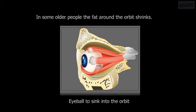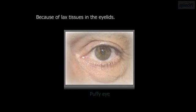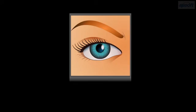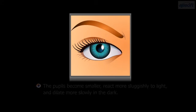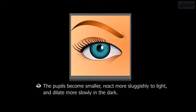A condition called ectropion occurs when the lower eyelid falls away from the eyeball. In some older people, the fat around the orbit shrinks, causing the eyeball to sink into the orbit. Because of lax tissues in the eyelids, the orbital fat can also bulge forward into the eyelids, making them appear constantly puffy. The muscles that regulate the size of the pupils weaken with age; the pupils become smaller, react more sluggishly to light, and dilate more slowly in the dark.